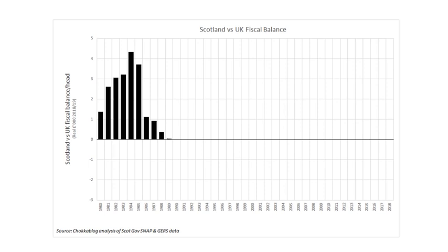The first thing we have is the oil boom in the 80s. Those black bars above the line are basically Scotland contributing to the rest of the UK because of oil revenues. In the peak year, it's about over £4,000 per capita for every man, woman, and child in Scotland — that was the scale of Scotland's contribution to the UK.